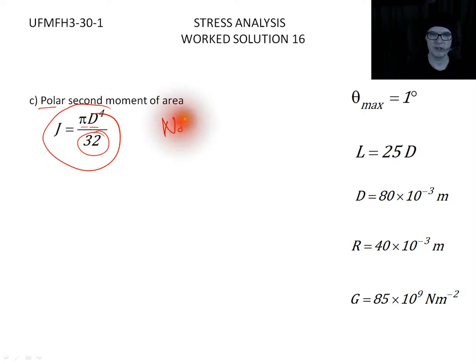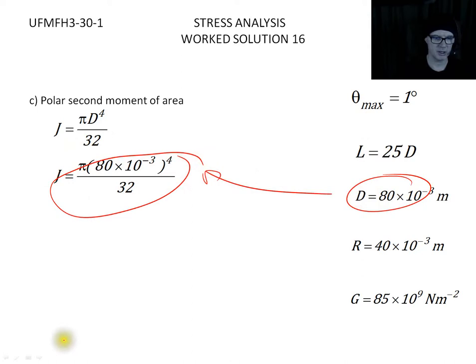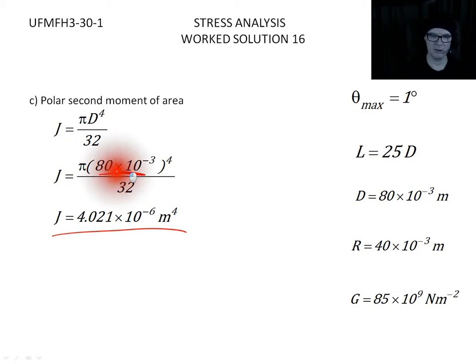Note that the second moment of area for a shaft experiencing bending, not torsion, is pi d to the power 4 over 64, so there's a difference there. The J and the I do not have the same values, but they do look similar. I'm going to put in my d and work out what the polar second moment of area is. We've put our answer for d in meters, which means we're going to get meters to the power of four coming out.